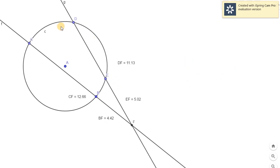Without any more diledalis, ang sabi lang dito, the entire secant DF times the segment outside the circle, or the external segment of the secant EF, is equal to the product of the entire secant here CF times the external segment of this given secant being DF. So we know the values, it's written here. DF is 11.13, EF is 5.02, CF is 12.66, and BF is 4.42.